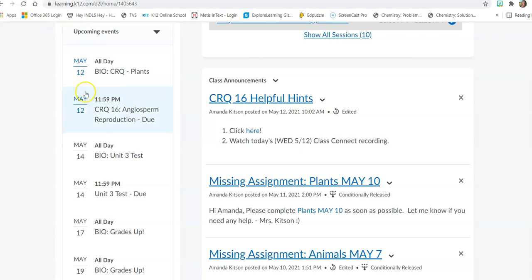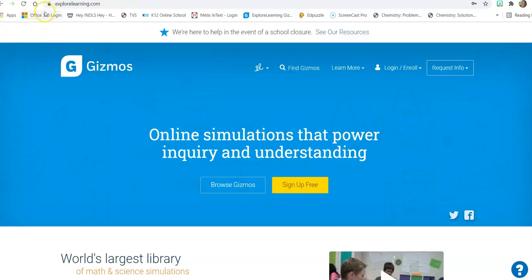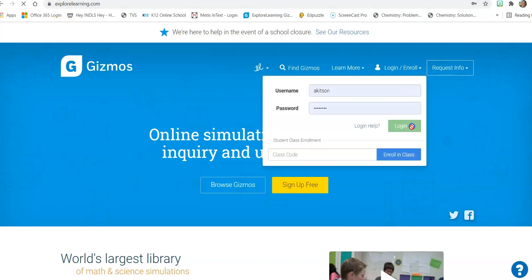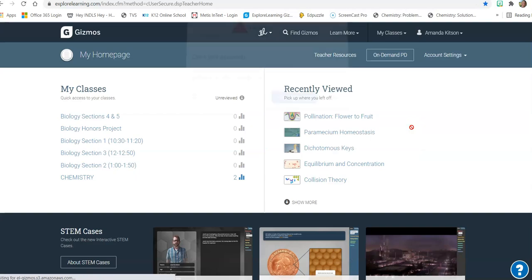So what you're going to do is go to explorelearning.com and log in to our class gizmo, our biology gizmo. You log in. If you don't remember how to log in, you can use the class code or you can, of course, if you really need to, email me for your username and password and I might be able to get it for you. But try to log in on your own or use the class code first.